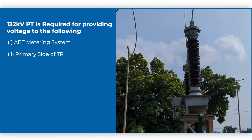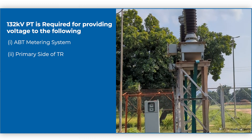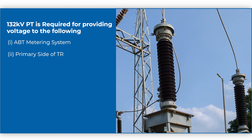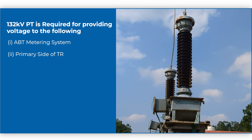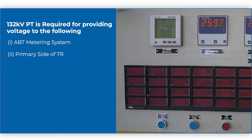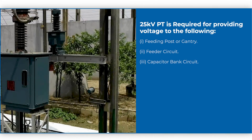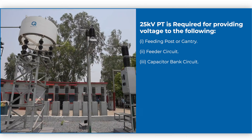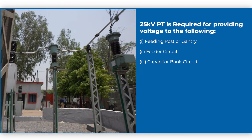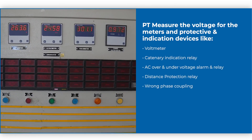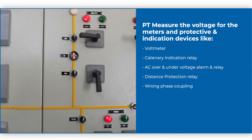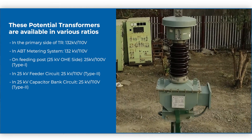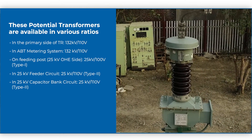Normally in TSS, 132 kV PTs are used only in the ABT metering system, but in some TSS, 132 kV PTs are provided between the CB and TR for voltage indication. 25 kV PT is provided on the gantry, feeder circuit, and capacitor bank circuit of the secondary side of single phase power transformer to sense or measure the voltage for meters, protective, and indication devices. These potential transformers are available in various ratios.